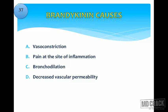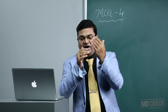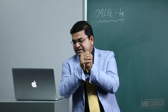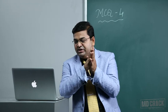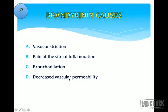Next question: bradykinin causes which of the following — vasoconstriction or pain at the site of inflammation? The correct answer is pain at the site of inflammation. Patients present with the classical signs of inflammation described by Celsus: calor, dolor, rubor, tumor, and swelling. Pain is what brings the patient to the clinic, and it is mainly caused by bradykinin. Vasoconstriction is caused by leukotrienes and thromboxane. Bronchodilation and decreased vascular permeability are not attributed to bradykinin.